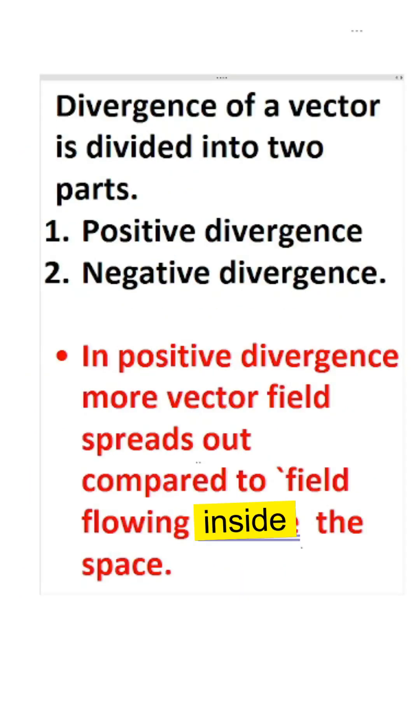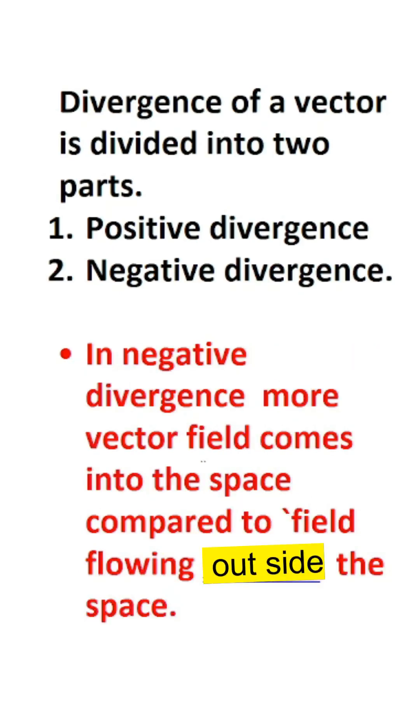Divergence of a vector is divided into two parts: positive divergence and negative divergence. In positive divergence, more vector field spreads out compared to field flowing inside the space. In negative divergence, more vector field comes into the space compared to field flowing outside the space.